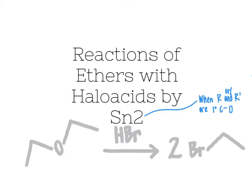In the next video, we'll look at SN1 reactions, which occur when the carbon directly bonded to the oxygen is a secondary carbon, a tertiary carbon, or something more sterically hindered. In this video, we're focusing exclusively on situations where the R group carbons are primary carbons.